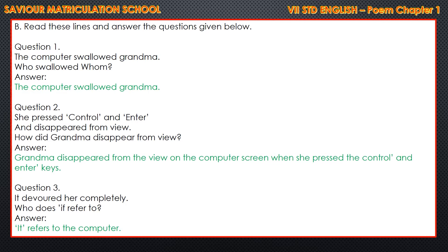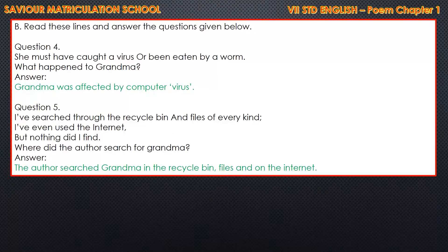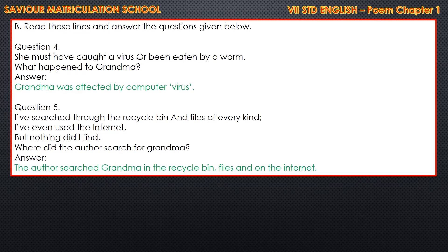Question 3: It devoured her completely — who does 'it' refer to? Answer: It refers to the computer. Question 4: She must have caught a virus or been eaten by a worm — what happened to grandma? Answer: Grandma was affected by a computer virus. Question 5: I have searched through the recycled bin and files of every kind, I have even used the internet, but nothing did I find — where did the author search for grandma? Answer: The author searched for grandma in the recycled bin, files, and on the internet.